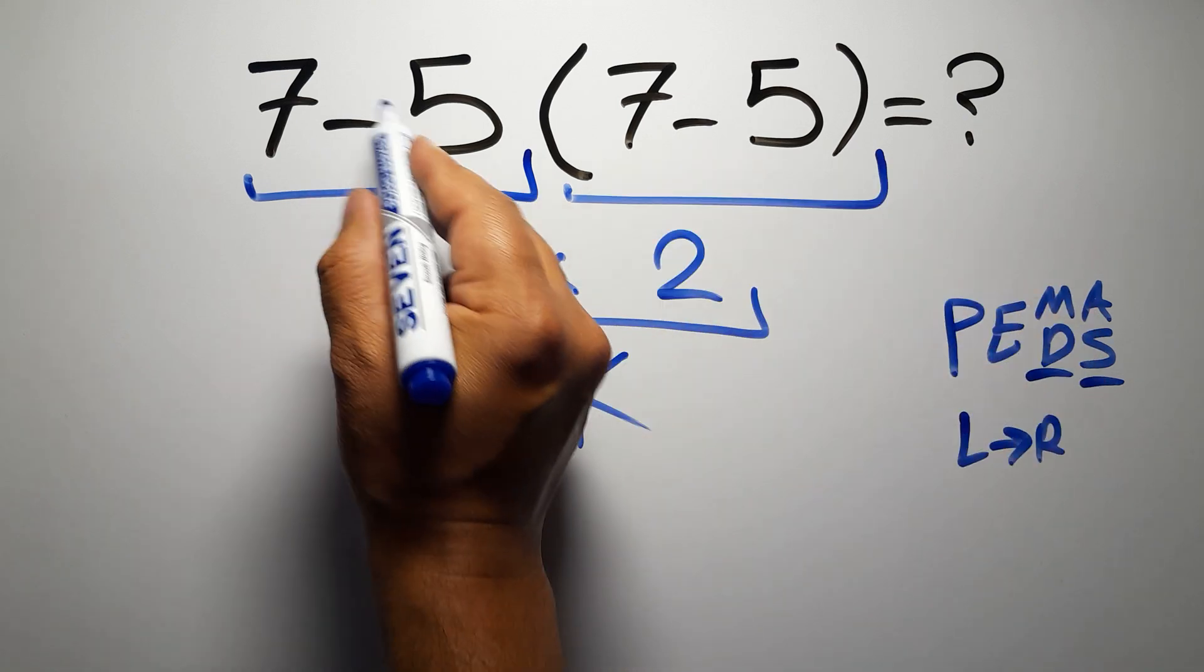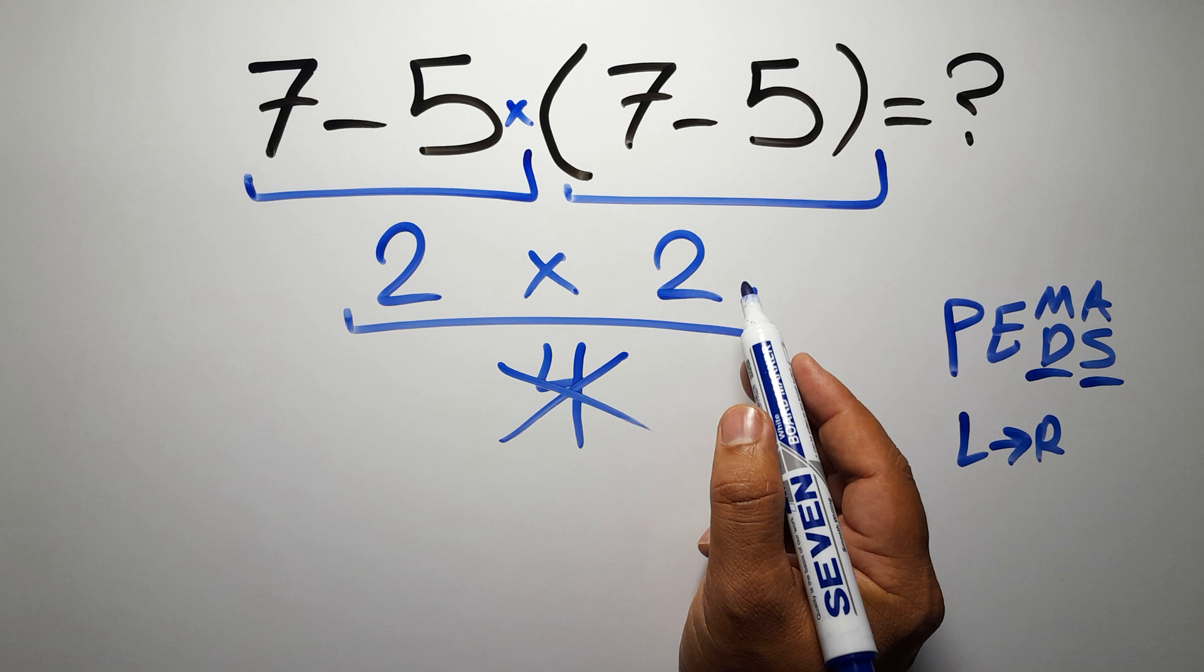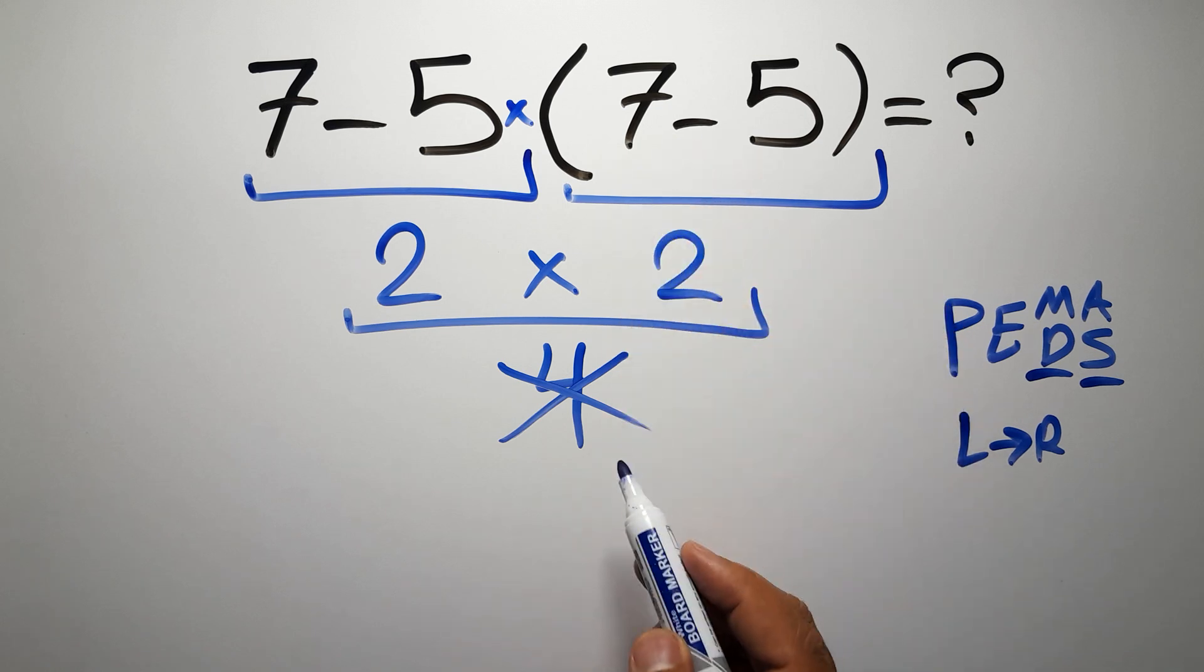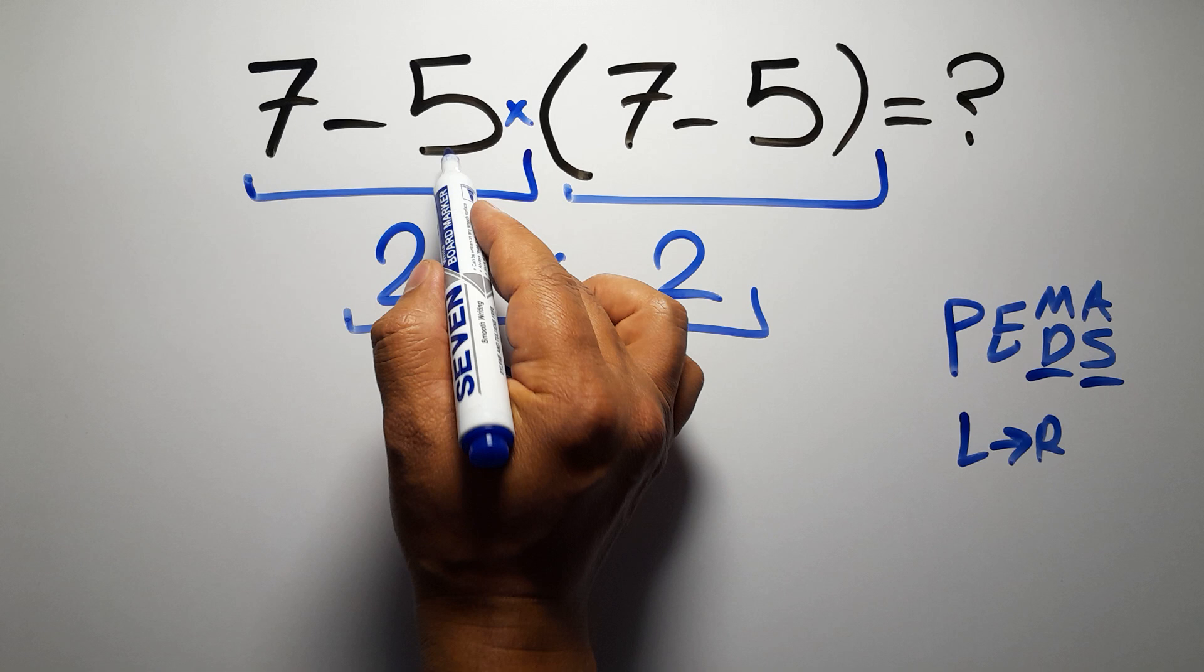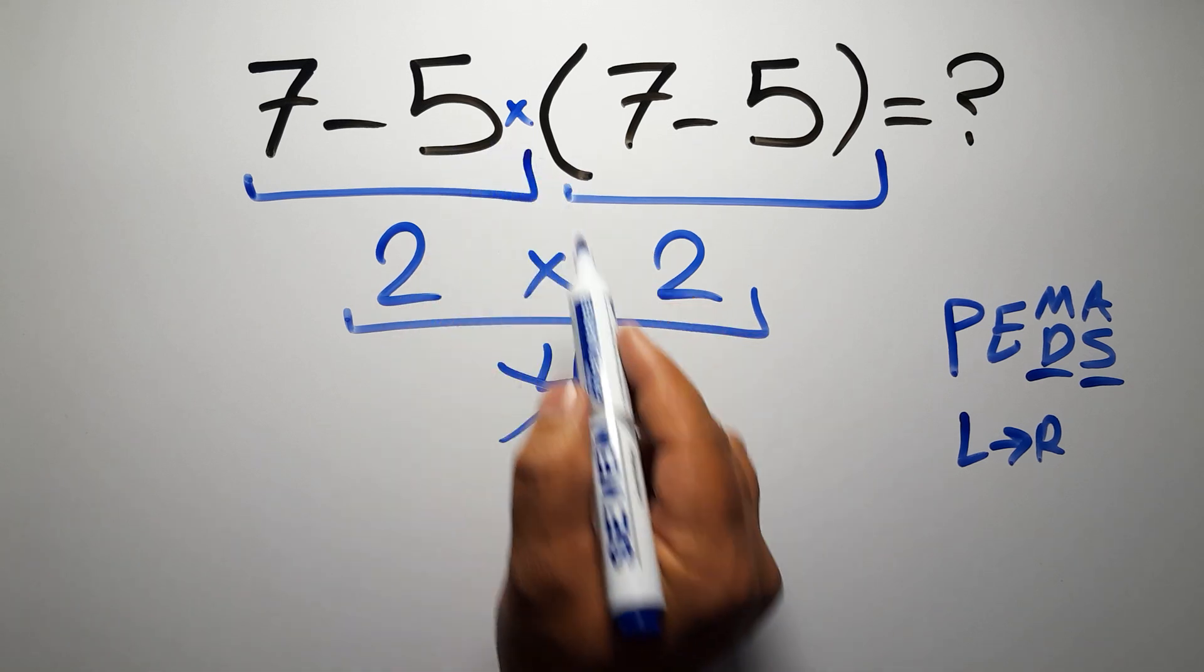In this expression we have one subtraction, one multiplication, and one parentheses. Inside this parentheses we have one subtraction. Here we have a multiplication because in mathematics when a number is placed next to parentheses it means multiplication, and we usually don't write the multiplication sign for brevity.